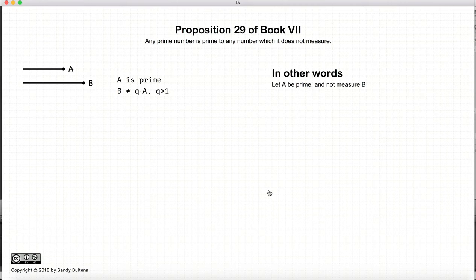In this proposition, we start off with two premises: one, that we have a number A which is prime, and we have another number B which is not measured by A. And this proposition states that if these two conditions are true, then A and B are relatively prime.